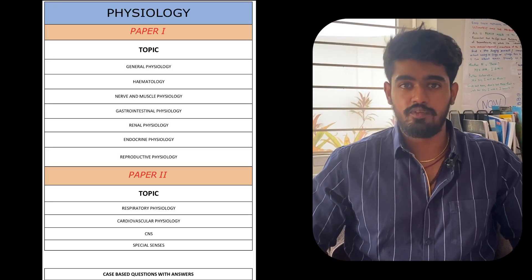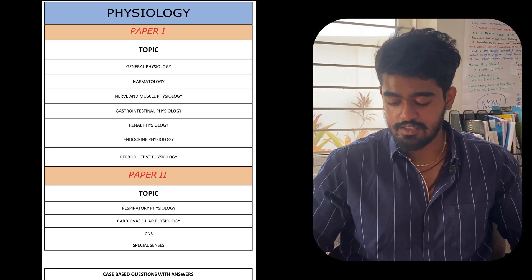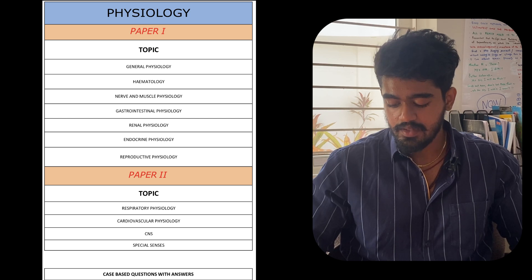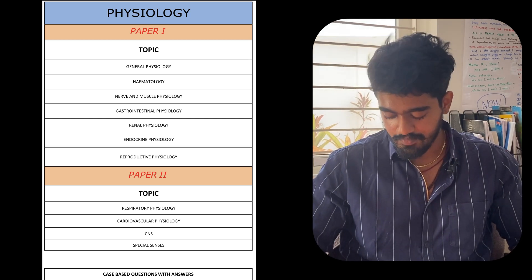As I keep repeating, this video is meant for people who just want to pass — who are in the last minute and are clueless. I'm giving you the most high-priority content that will definitely help you pass. Moving to physiology: paper 1 topics are general physiology, hematology, nerve and muscle physiology, GIT, renal physiology, endocrine physiology, and reproductive physiology.